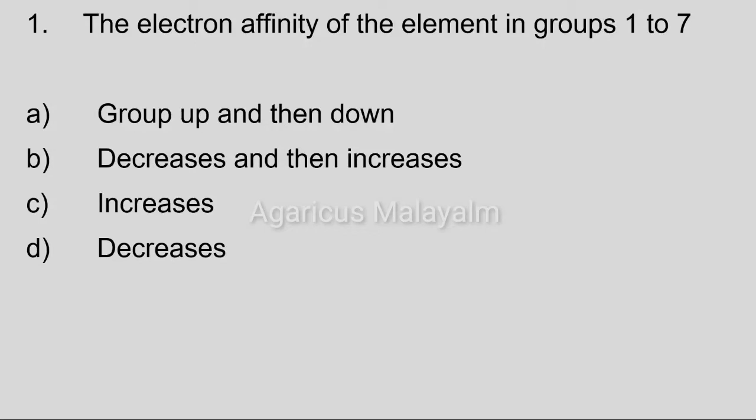First question: The electron affinity of elements in groups 1 to 7 — Option A: goes up and down. Option B: decreases and then increases. Option C: increases. Option D: decreases. Correct answer: Option C, increases.